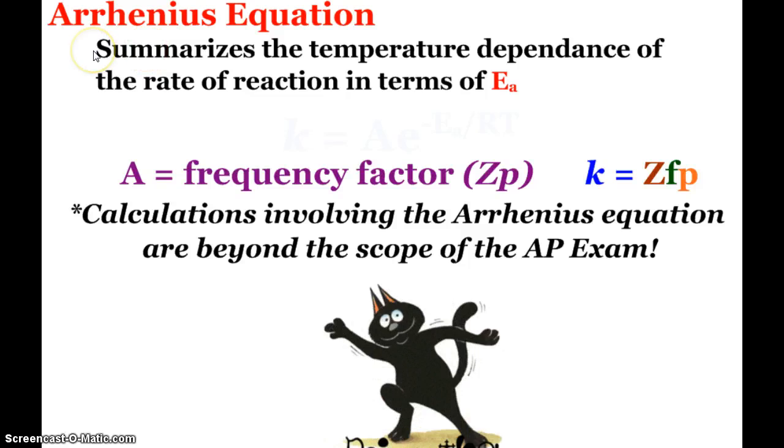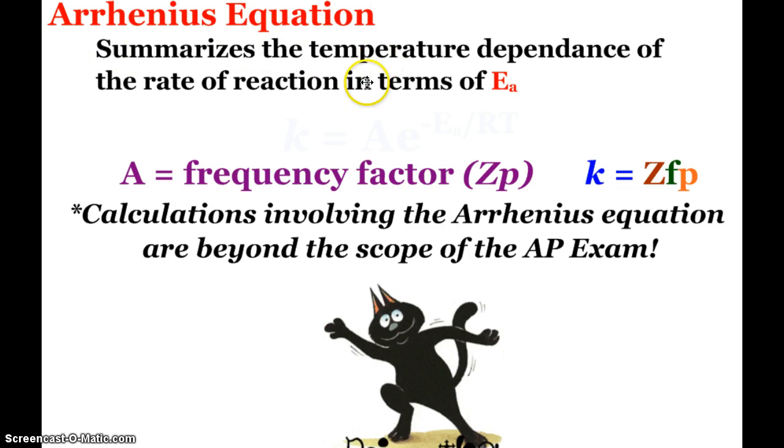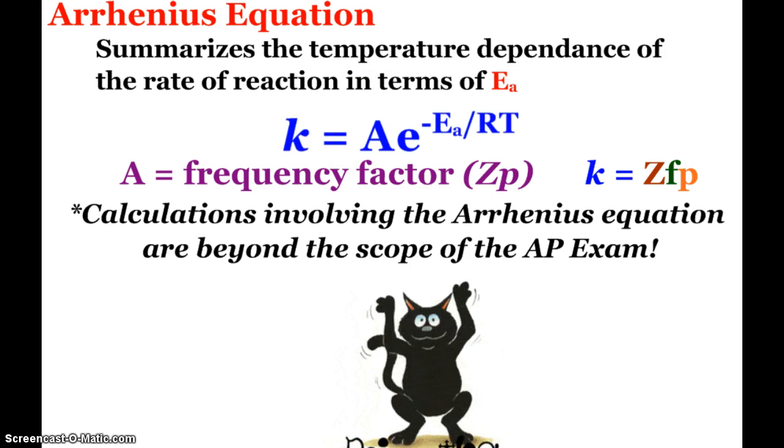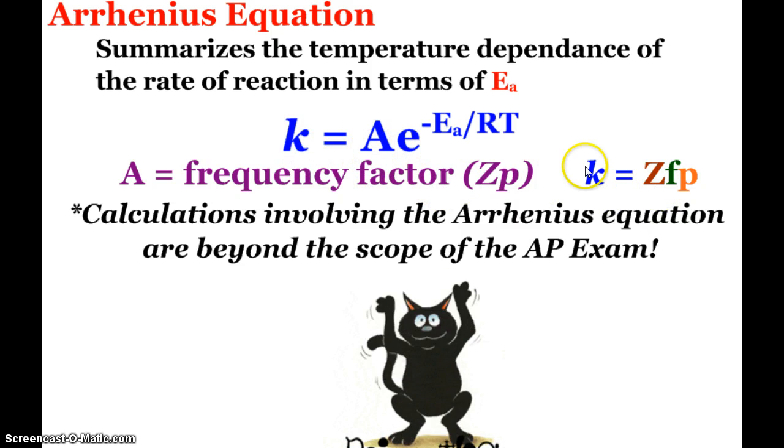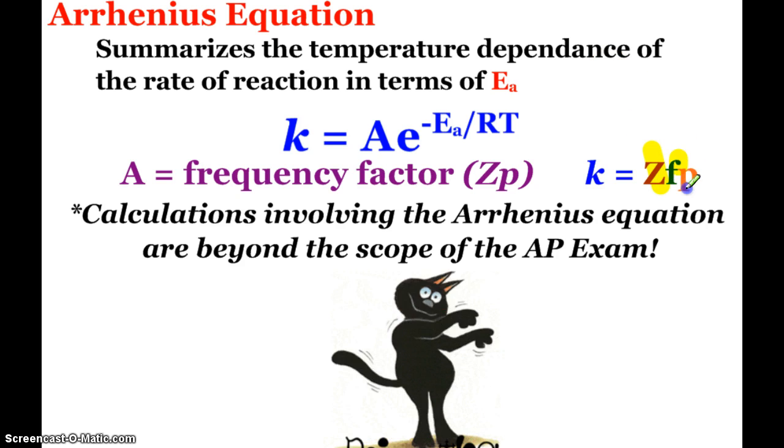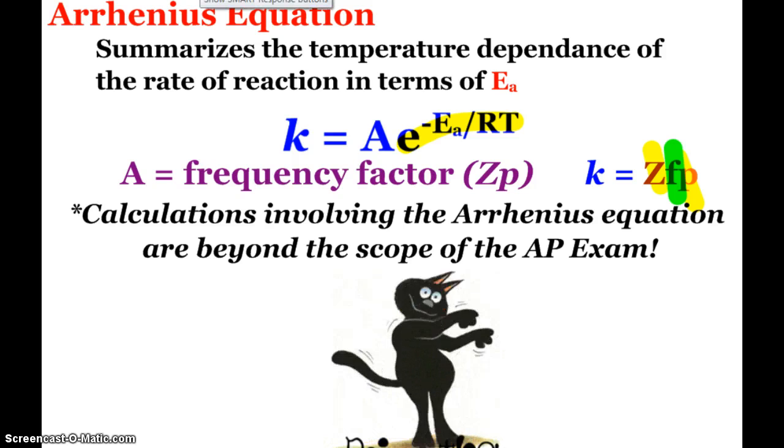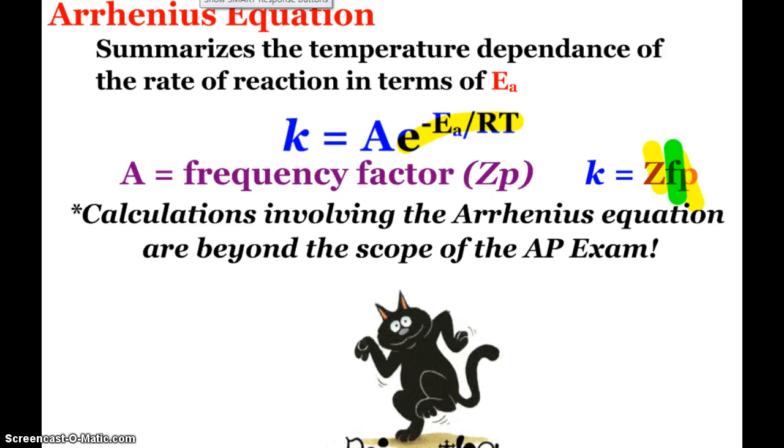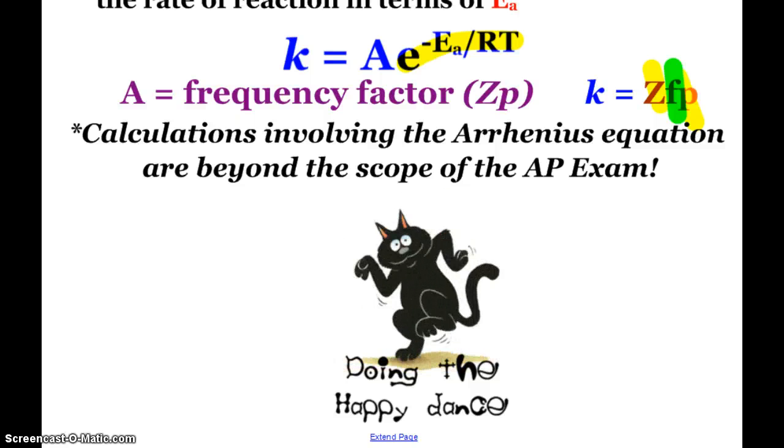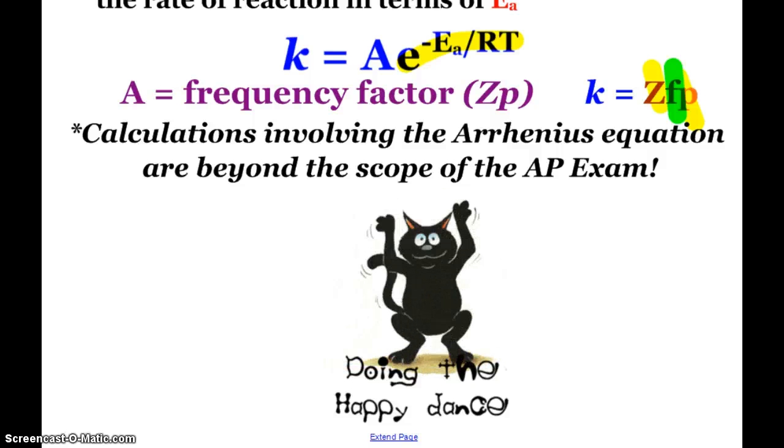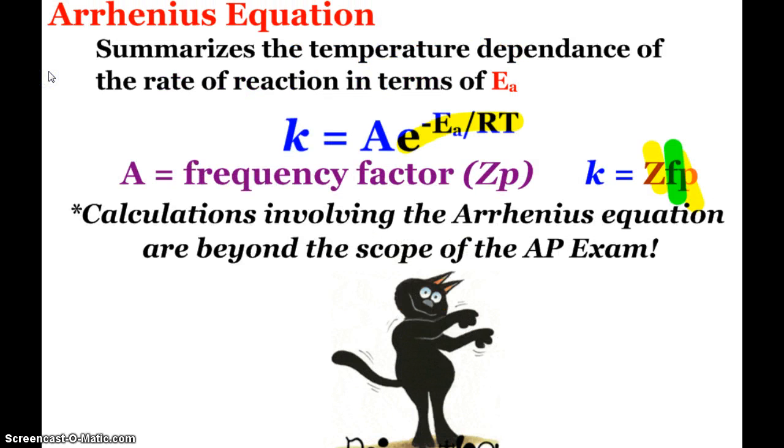We can tie it all together with the Arrhenius equation. It summarizes the temperature dependence of the rate of reaction in terms of activation energy. For collision theory, we saw k equals ZFP. Here, A ends up lumping together Z and P, and this is what we saw as F before. Calculations involving the Arrhenius equation are beyond the scope of the AP exam, so we can do our little happy dance because we don't have to worry about plug and chug calculations. But it can be used to ask thoughtful questions about reaction rates and how temperature and activation energy are linked together.